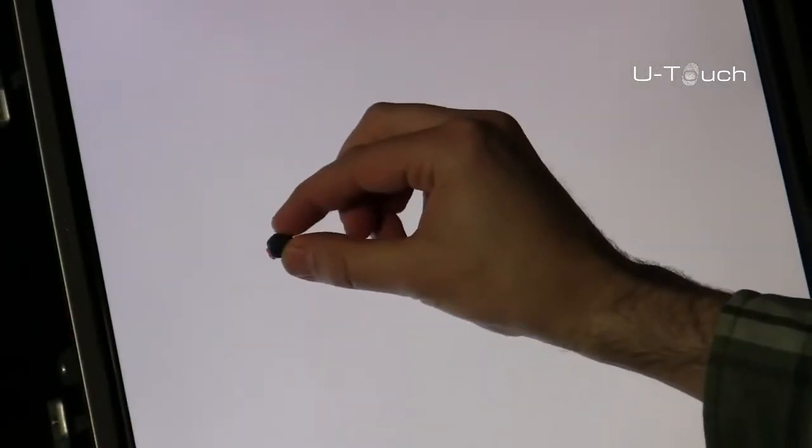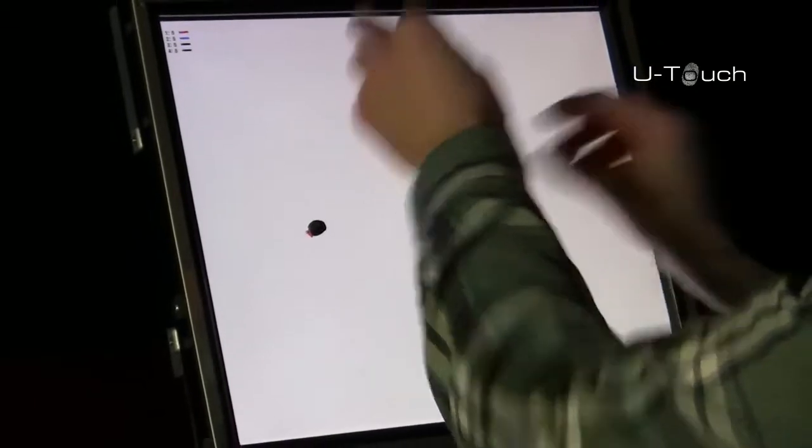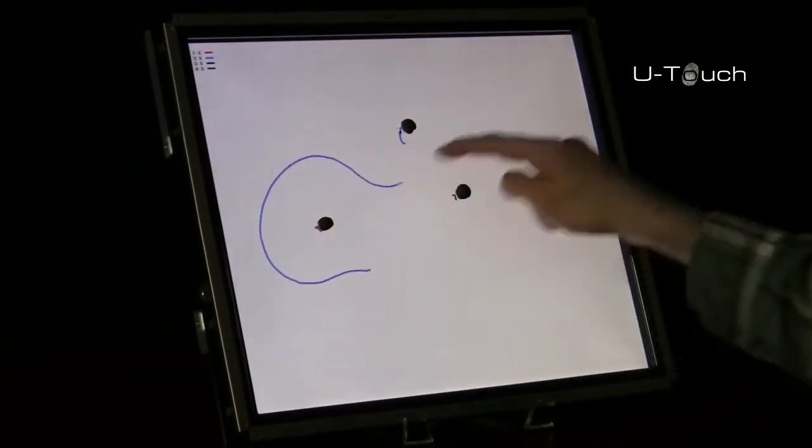We avoid bubblegum failures by identifying and ignoring debris on the screen through advanced static object detection and rejection.